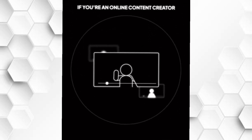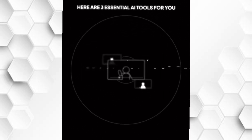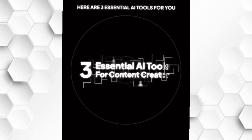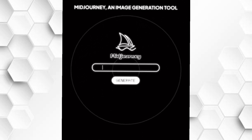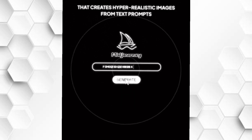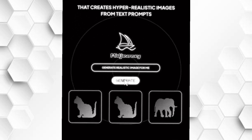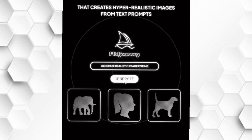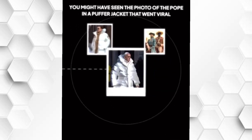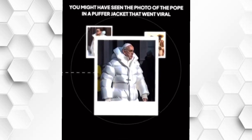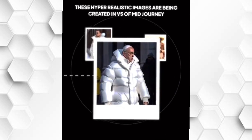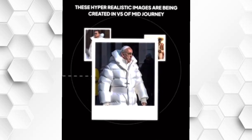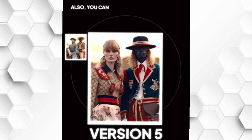If you're an online content creator, here are three essential AI tools for you. Midjourney is an image generation tool that creates hyper-realistic images from text prompts. You might have seen the photo of the Pope in a puffer jacket that went viral — this image was created in version 5 of Midjourney.